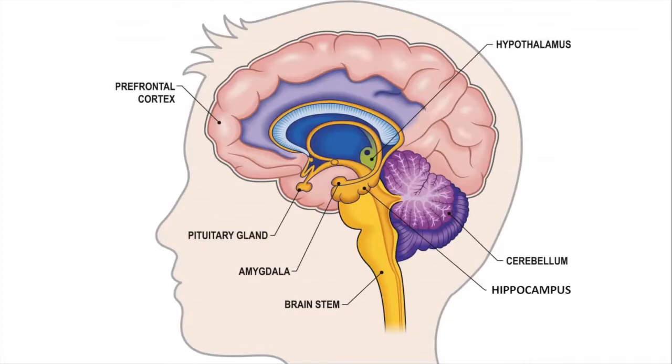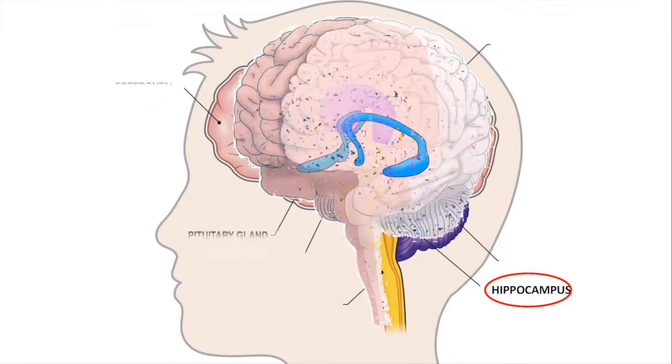Memory is formed in the brain. The main region of the brain that deals with memory is called the hippocampus, shown in the color blue in this picture.